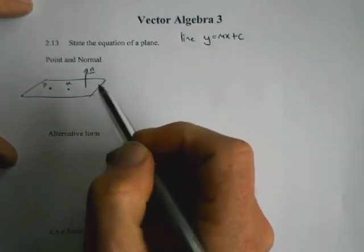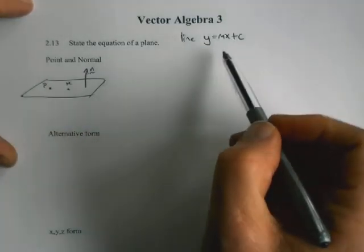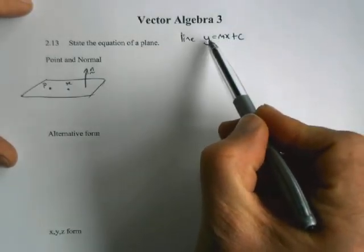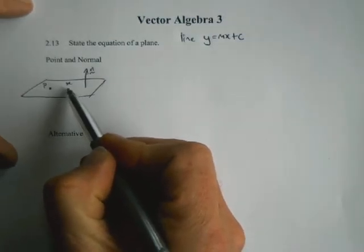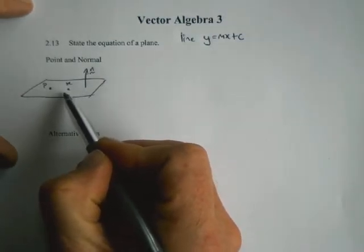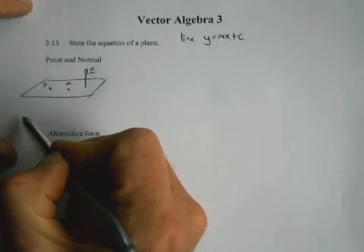Okay, so just like the equation of the line, as long as x and y made this true, then it was on the line. In this situation, we're going to have an equation which is going to have x in it, and as long as our equation is true, then x will be in the plane.